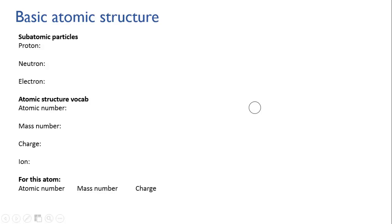You may recall from the first video that every atom is made up of subatomic particles called protons, neutrons and electrons. The protons are positively charged and they have a mass of about one atomic mass unit, an AMU.